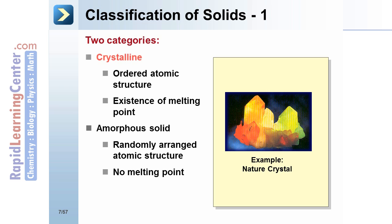Solids can be divided into two groups. The first is crystalline, as seen in this natural example of a crystal to the right.